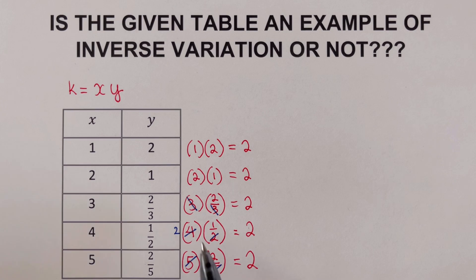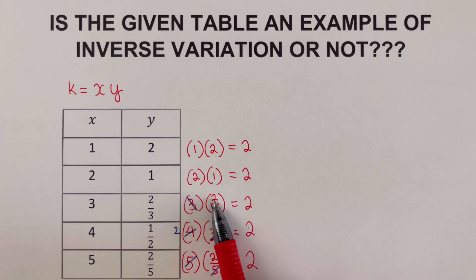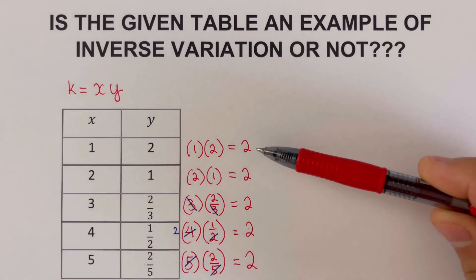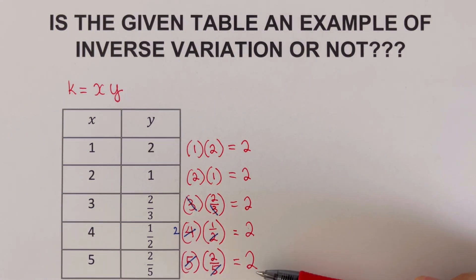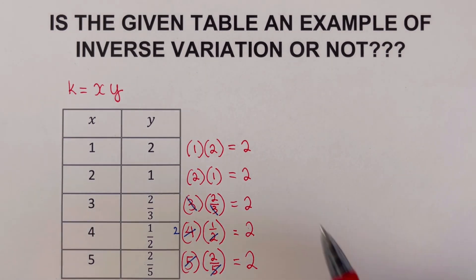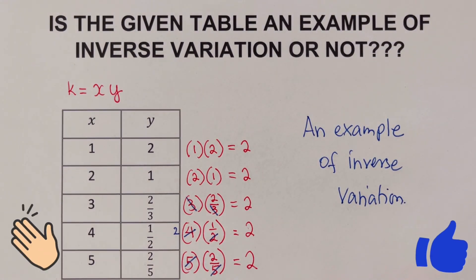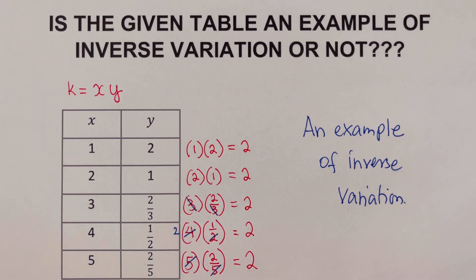Working through the calculations: 3 times two-thirds — we cancel the threes and are left with 2; 4 times one-half — half of four is 2; and 5 times two-fifths — we cancel the fives and are left with 2. The product of x and y equals 2 for all rows, so the proportionality constant k equals 2. This is an example of an inverse variation.